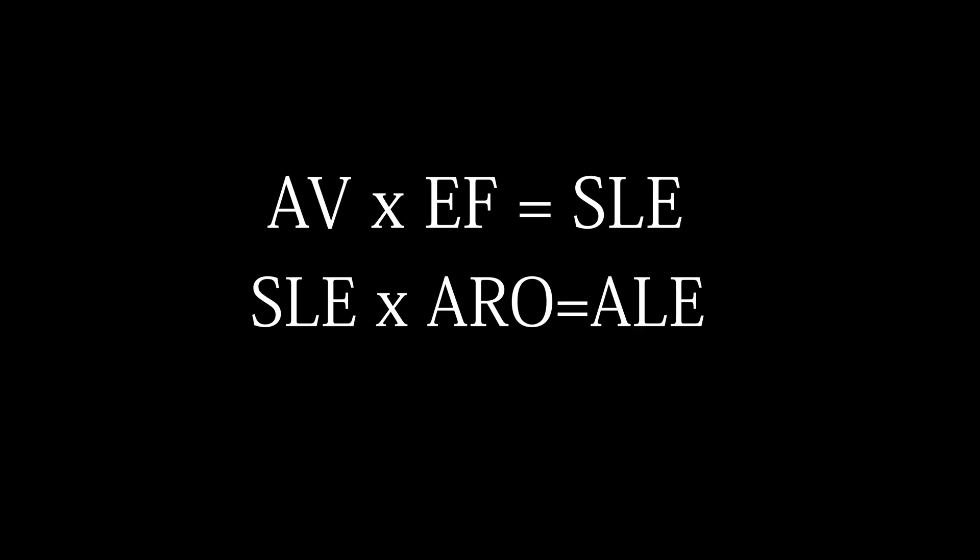For example, to get a single loss expectancy, you need to multiply asset value by exposure factor — AV times EF equals SLE, single loss expectancy. Then you can use SLE to get annual loss expectancy by multiplying it with annual rate of occurrence. SLE times ARO equals ALE.